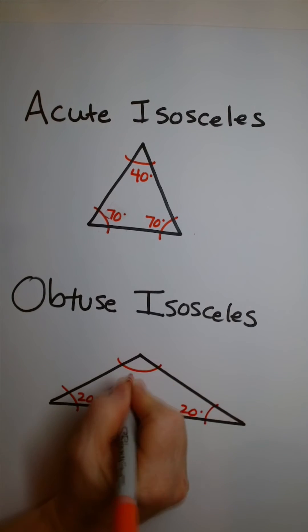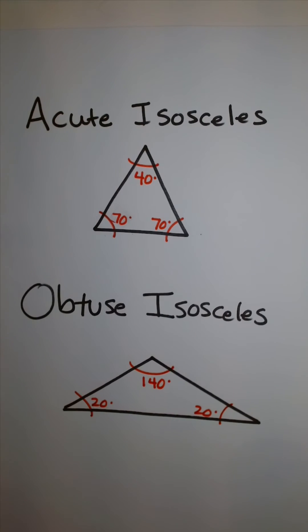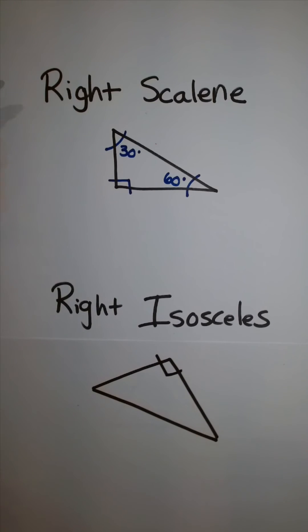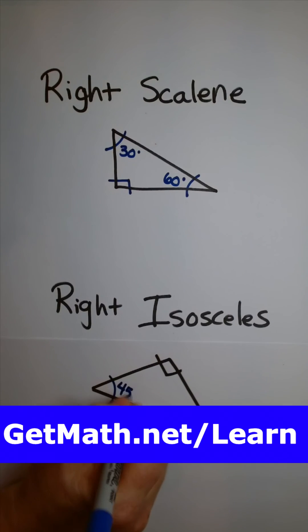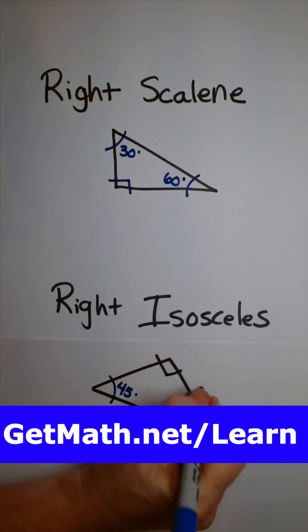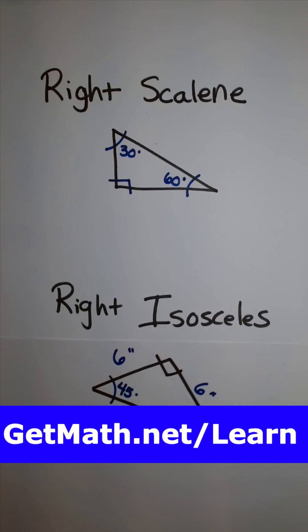You can put these things together — acute and obtuse isosceles triangles. If you'd like more math learning like this, join me at getmath.net/learn.